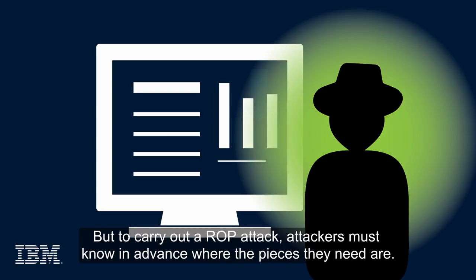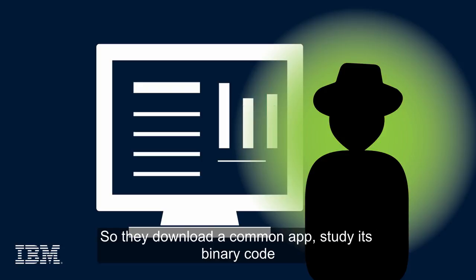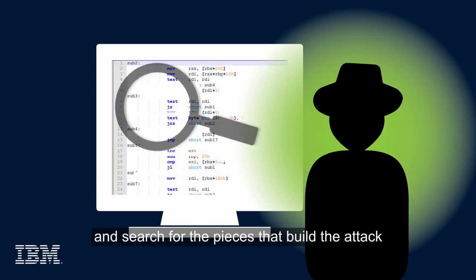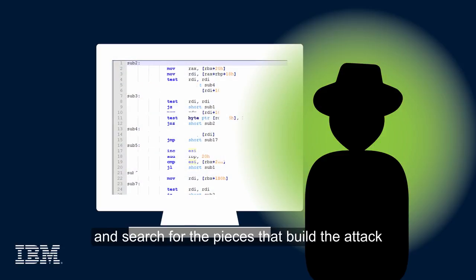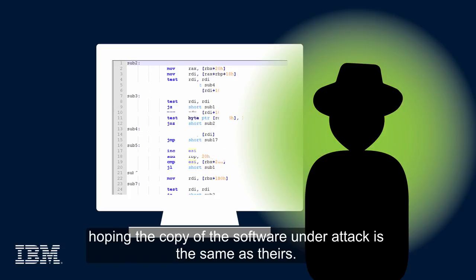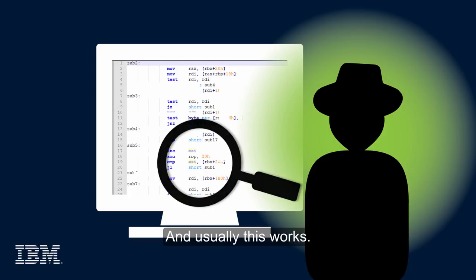But to carry out a ROP attack, attackers must know in advance where the pieces they need are. So they download a common app, study its binary code, and search for the pieces that build the attack, hoping the copy of the software under attack is the same as theirs. And usually this works.